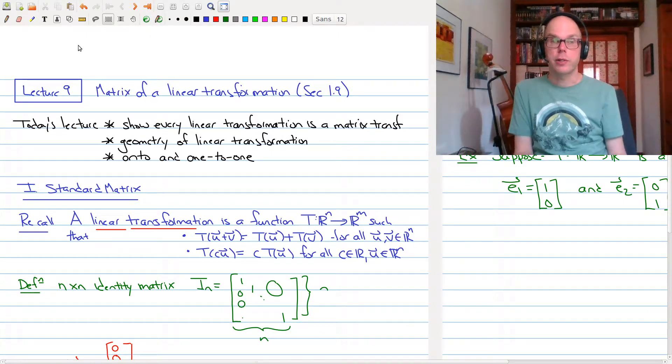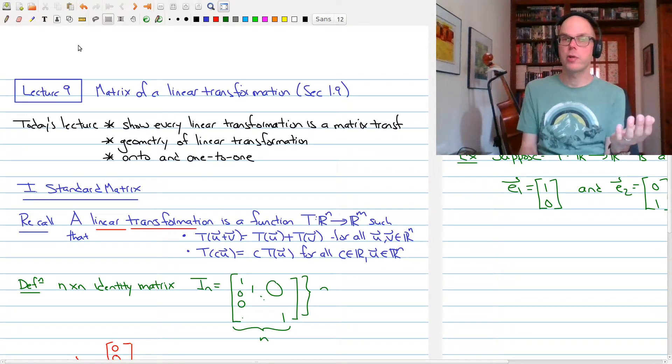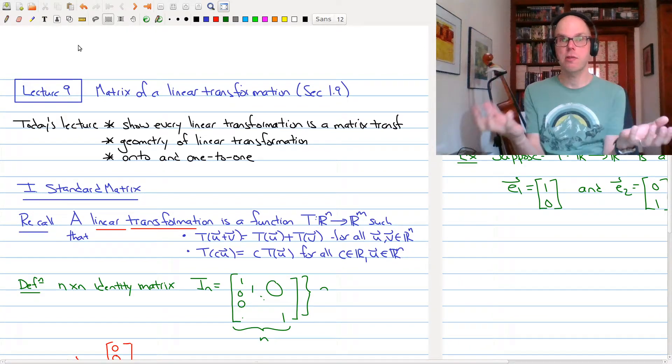If you remember from our last lecture, we were looking at what a transformation is and we looked at two special types of transformations: matrix transformations and linear transformations. We stated a theorem that said that these two things are the same.